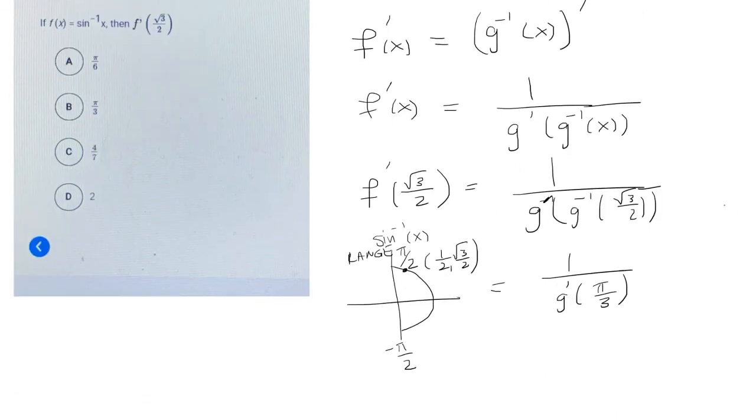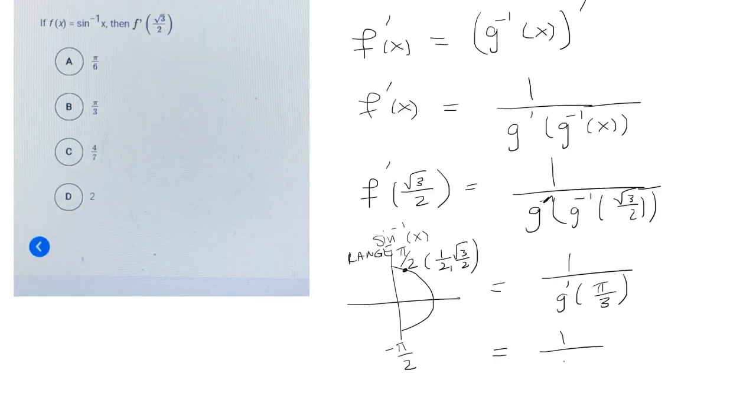So we need to find 1 over cosine of pi over 3, which we do have here. It's the x value. So that would just be 1 over 1 half, which is 2.